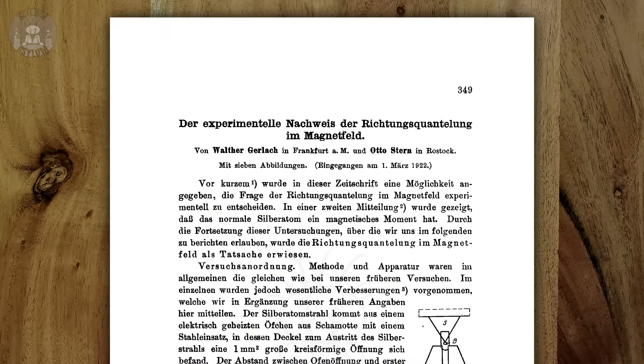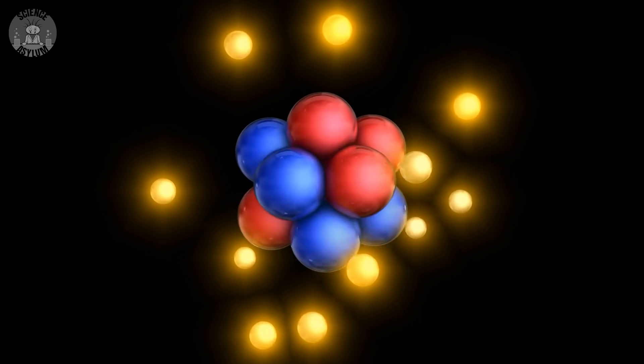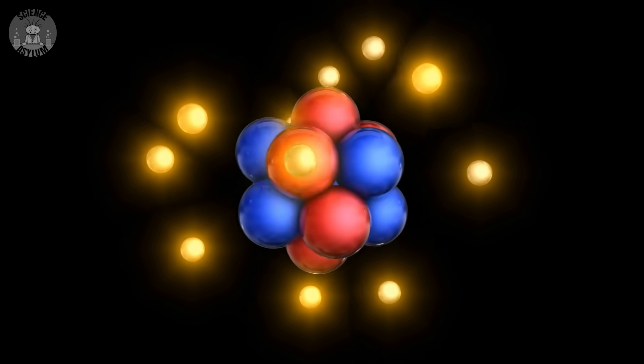Stern and Gerlach were trying to prove space quantization of angular momenta. Or in plain English, they were interested in measuring magnetism caused by electron orbits. The idea that the particles themselves could be spinning? Not even remotely on their radar. To understand how they could have missed it, we need some historical context.